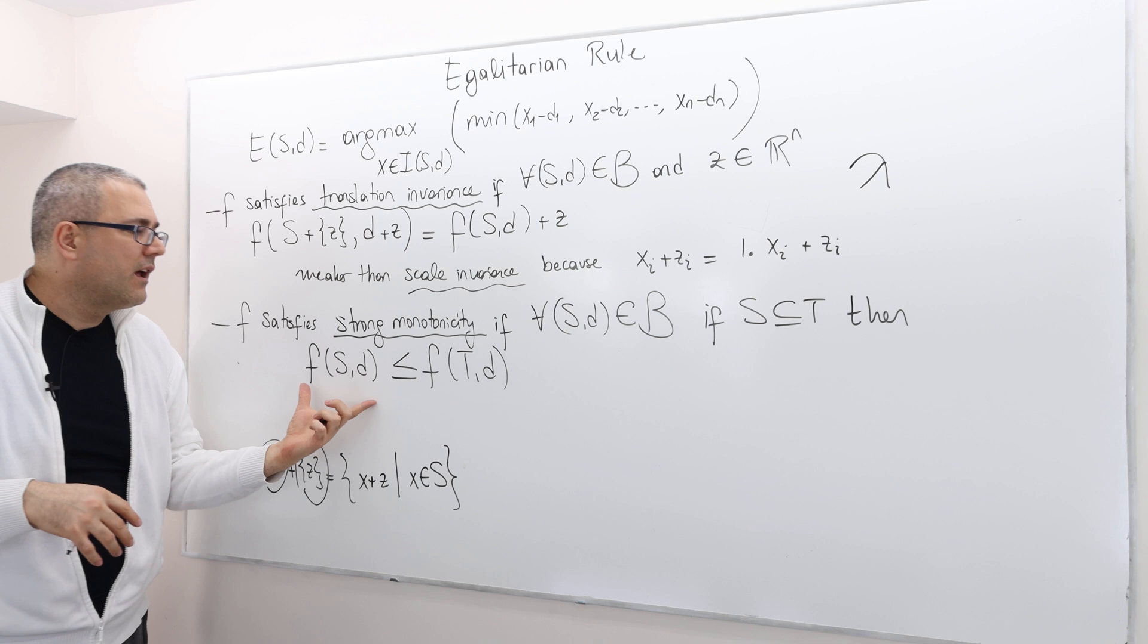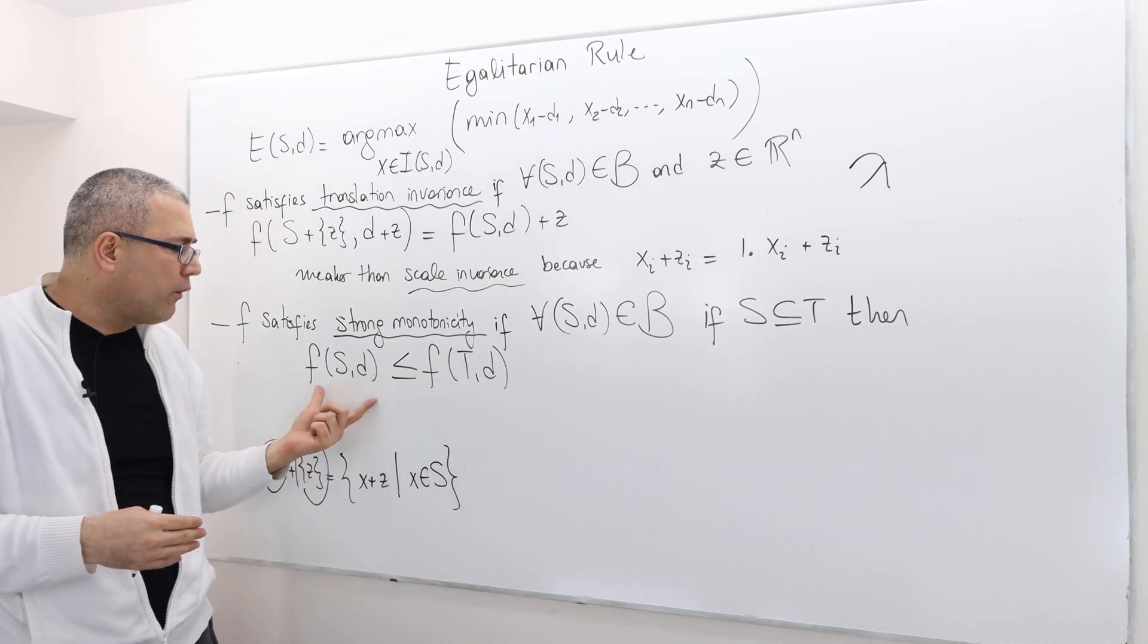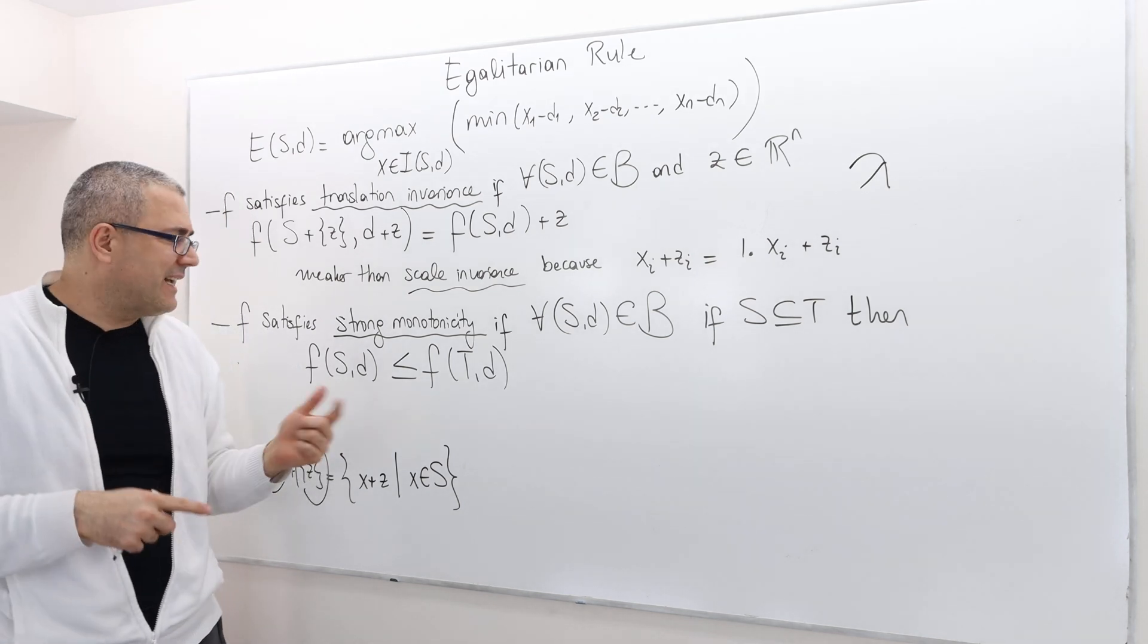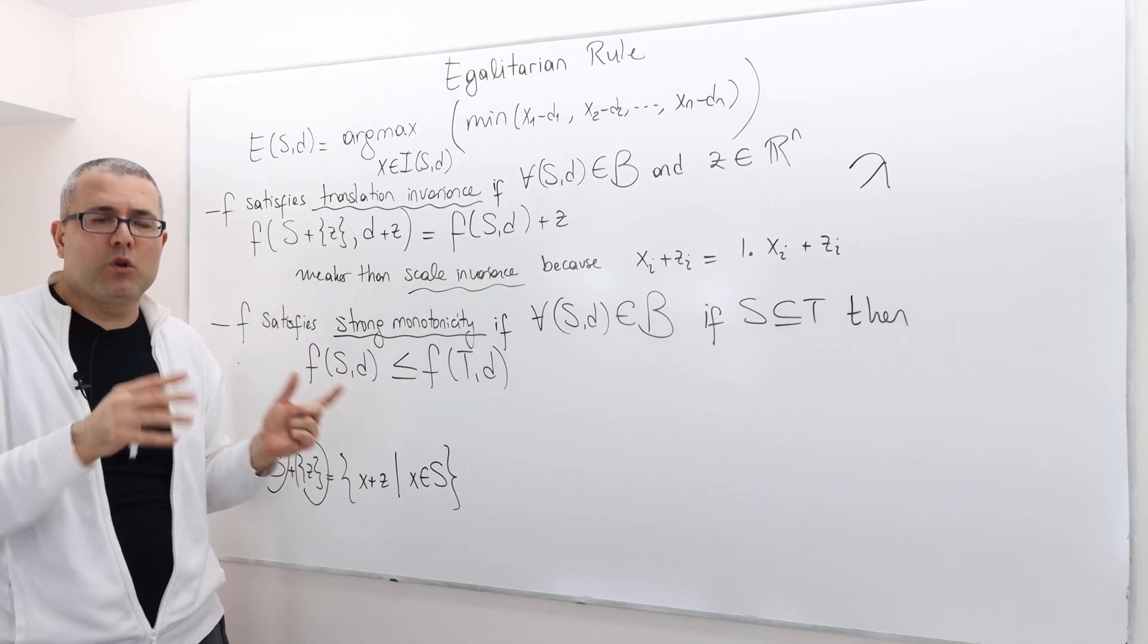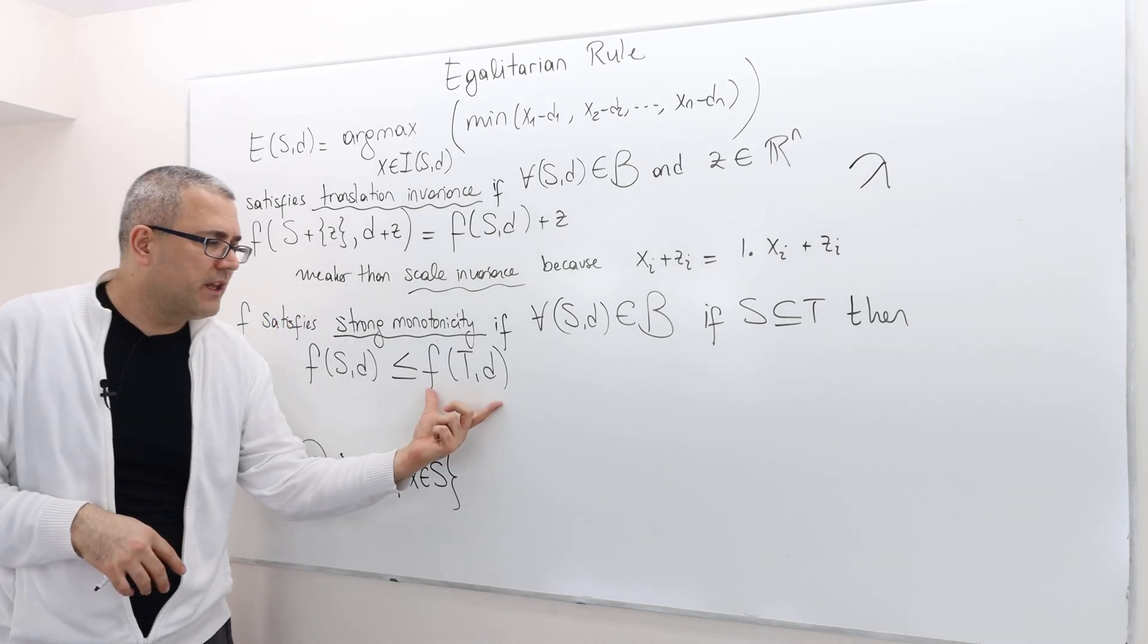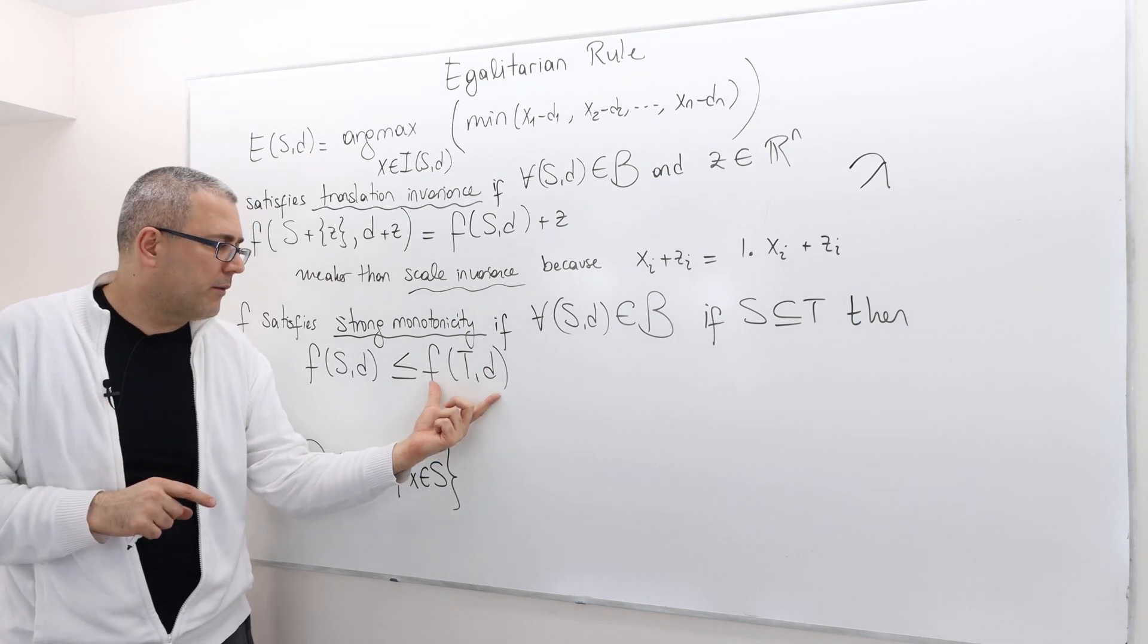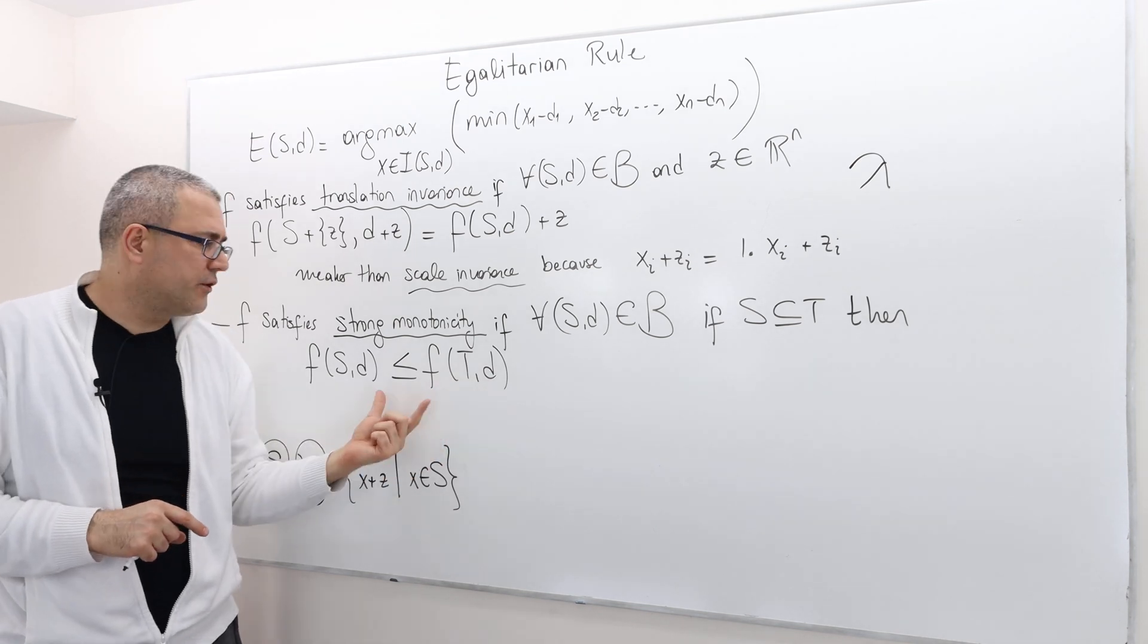Then the bargaining solution should offer each individual at least as high as what they were receiving in this smaller bargaining problem. So the solution of the bargaining problem T should be greater than or equal to this payoff vector...